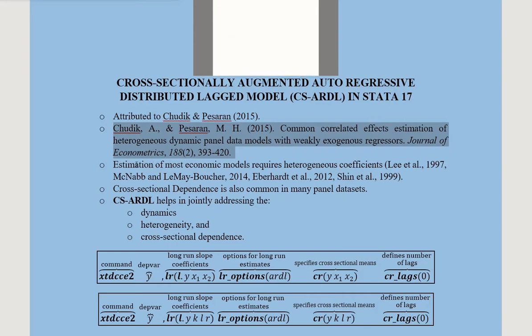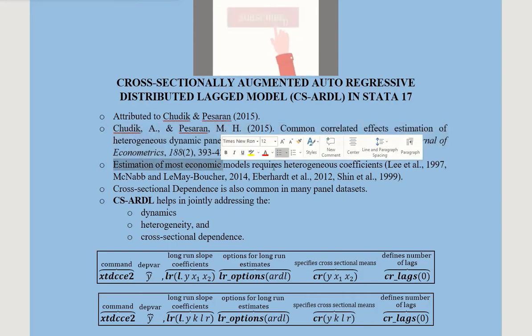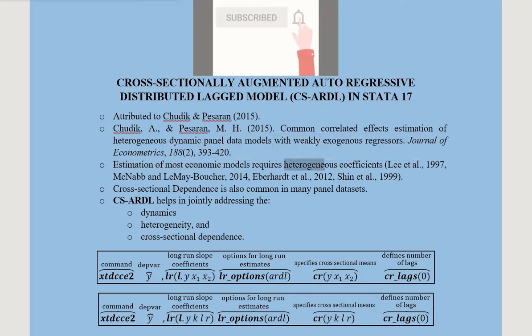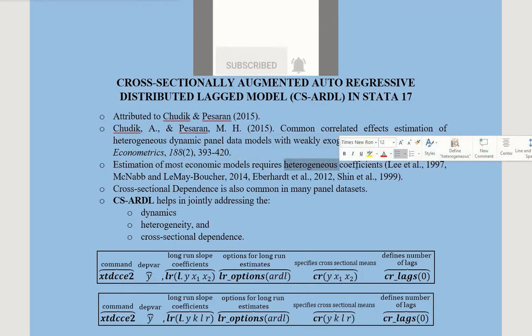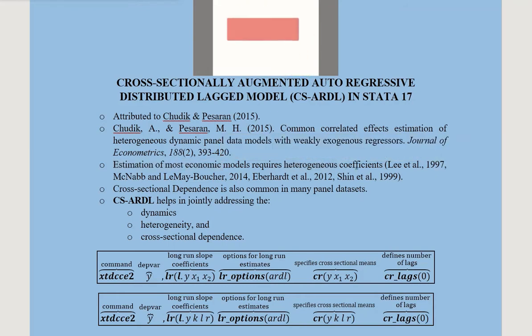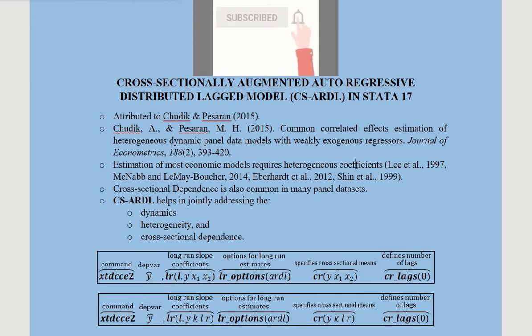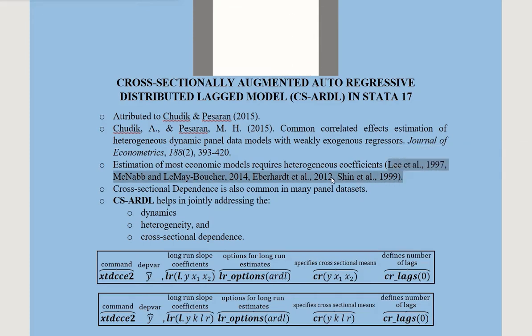Basically, in most economic models we have heterogeneity in the coefficients — that is, the slopes are heterogeneous and not the same. There are a number of studies that can verify this.